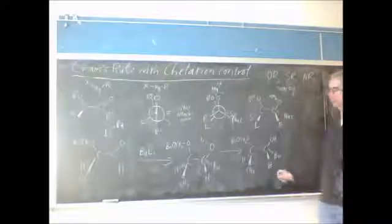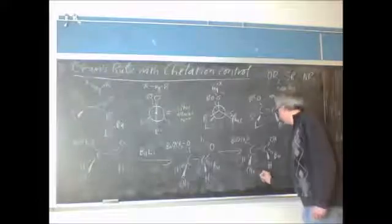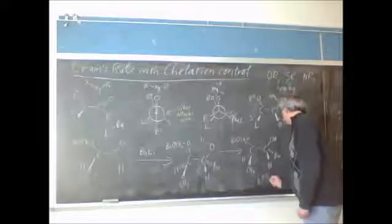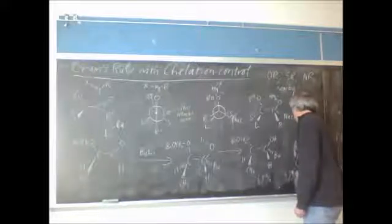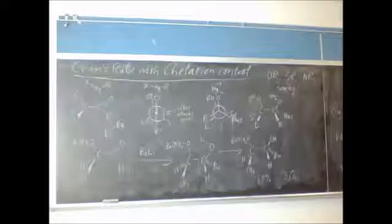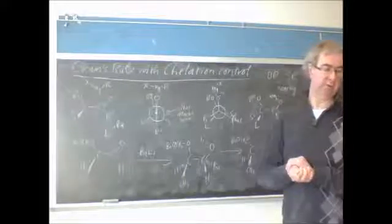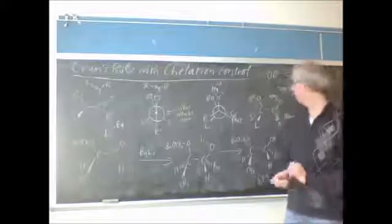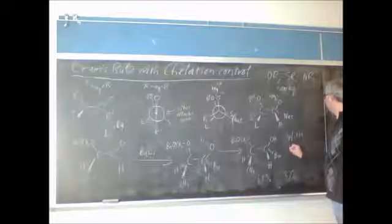And so this is formed, now it's not a, with butyllithium, it's only 63.3% compared to 37% of the other isomer. So that's not a real strong preference.